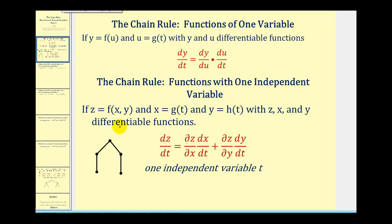If z equals f of x, y, x equals g of t, and y equals h of t, where z, x, and y are all differentiable, then dz/dt is going to be equal to the partial derivative of z with respect to x times dx/dt, plus the partial derivative of z with respect to y times dy/dt.